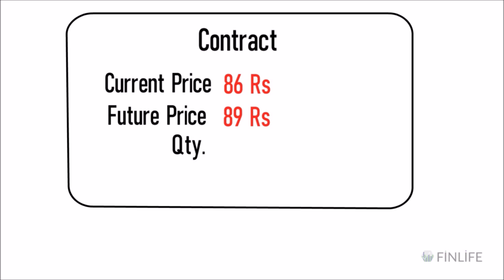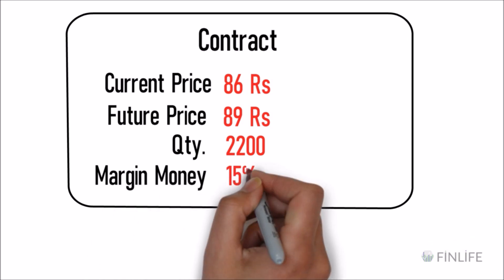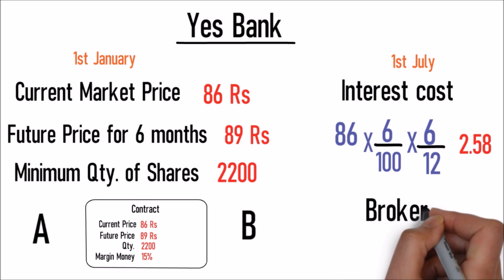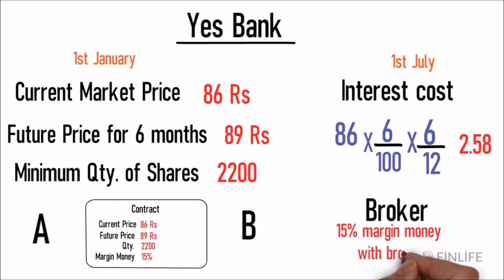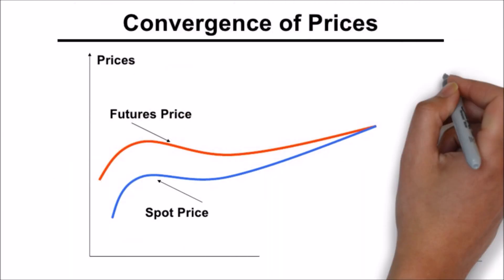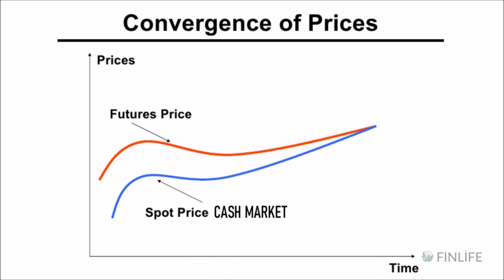As I told you in the Tata Motors example, both buyer and seller must deposit 15% or 10% as margin money with the broker so the deal is settled properly. After six months when the time period is over, the cash market rate and future price will coincide and come to the same price on the date of expiry. This happens because the time value has expired.